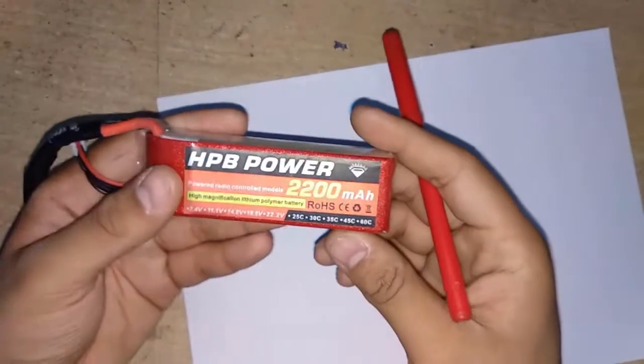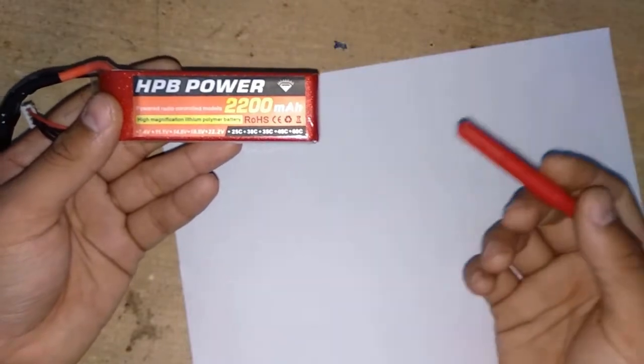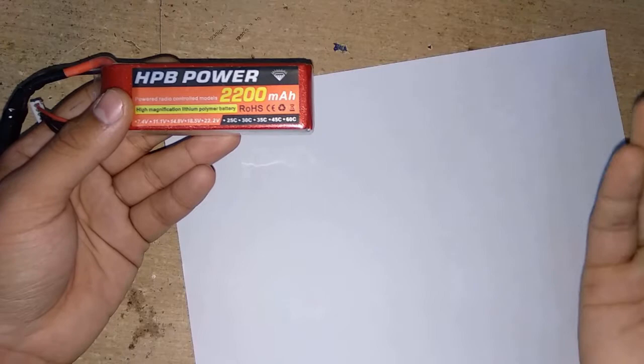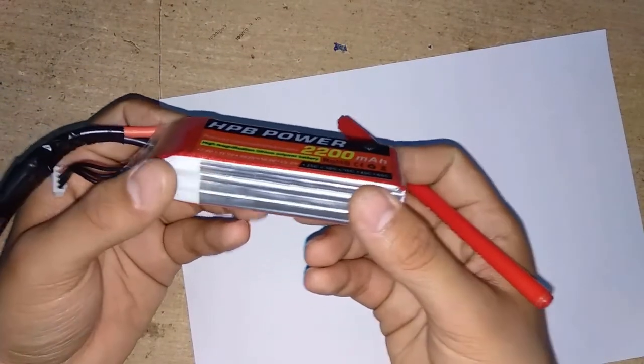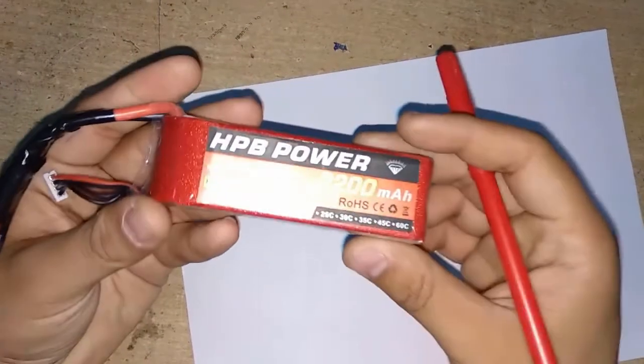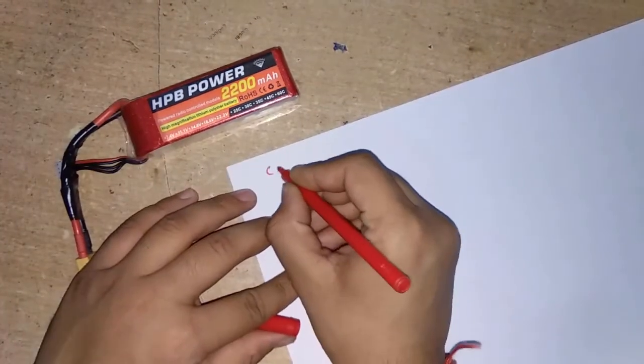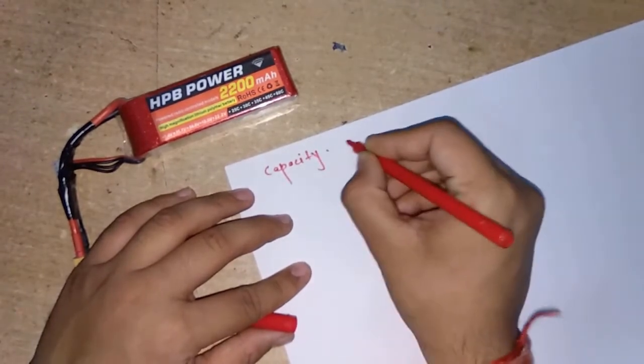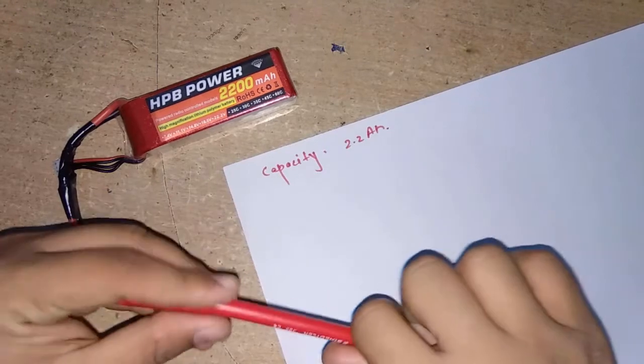If you're driving a small RC car or a drone which requires a lot of current, more than 2.5 or 3 ampere, this particular 2200 mAh battery would last around 45 minutes or even 30 minutes. So now you know that this is your capacity. The first point is your capacity, and for this battery it's 2.2 ampere hour.